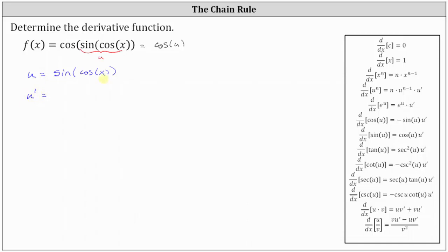Because we have a composition of functions, we need to apply the chain rule here. Let's let the inner function be v, where in this case the inner function is cosine x. The derivative of sine v with respect to x is equal to cosine v times v prime.